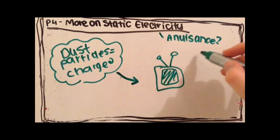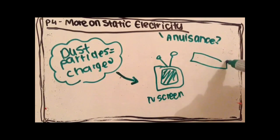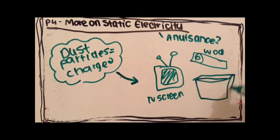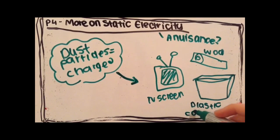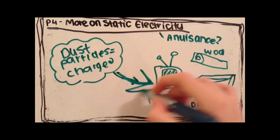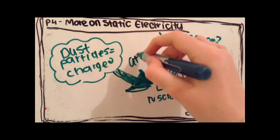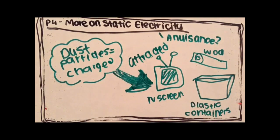Many objects around the house are made out of insulators that get easily charged. For example, the TV screen, wood, and plastic containers. And these attract dust particles, making cleaning a nightmare.